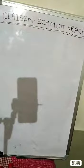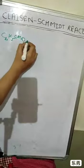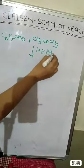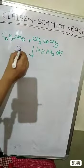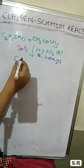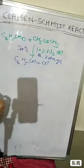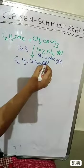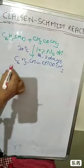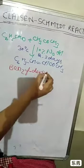Another example: C6H5CHO reacts with CH3COCH3 in the presence of 10% NaOH. We get C6H5CH=CHCOCH3. The name of this compound is benzalacetone.